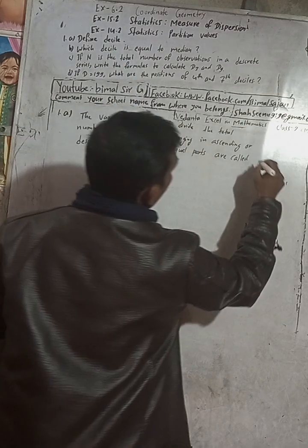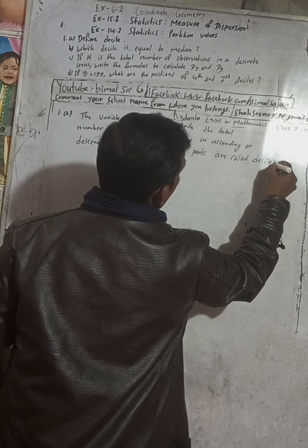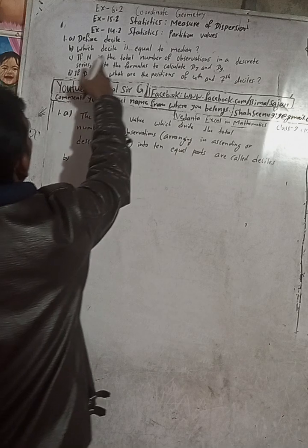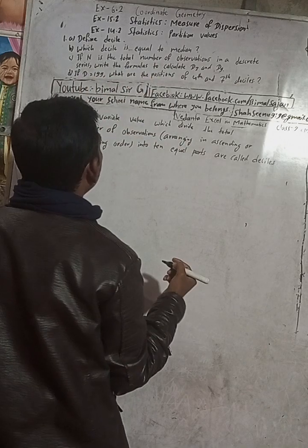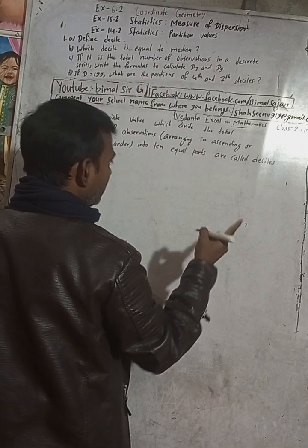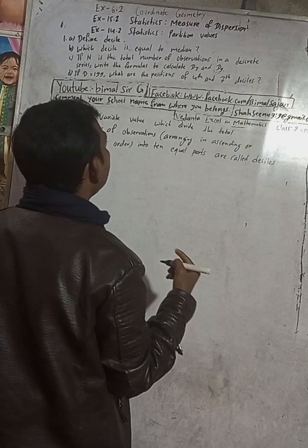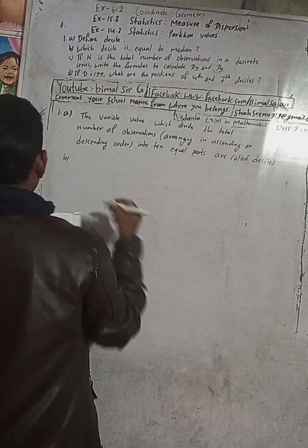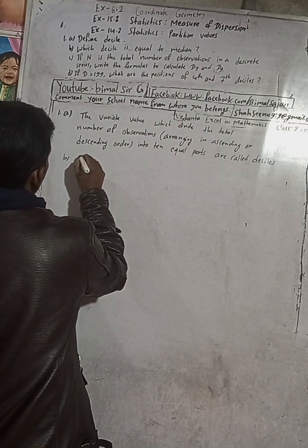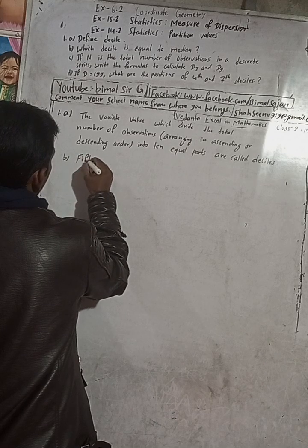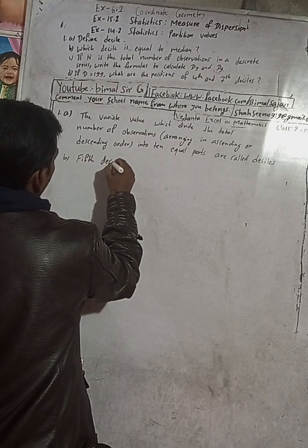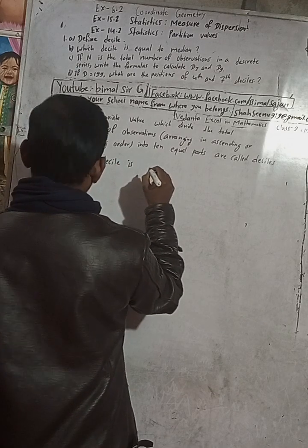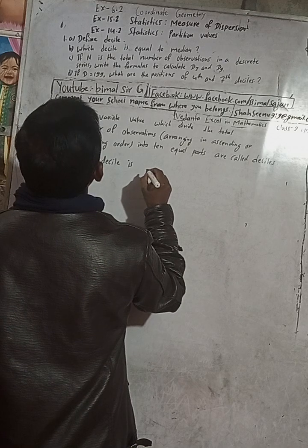What is deciles? A number is finished. Now B number: which deciles is equal to median? So in deciles there is 10 equal parts. 5th deciles is equal to median. So 5th deciles is equal to median.